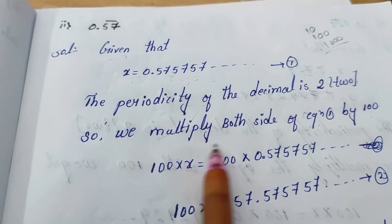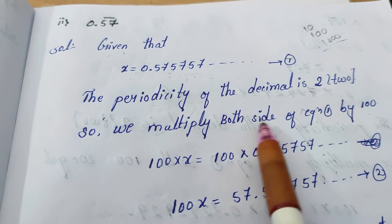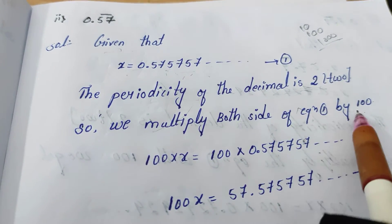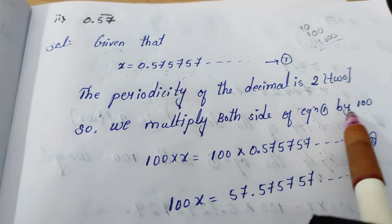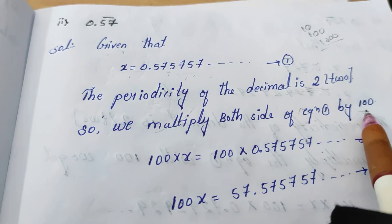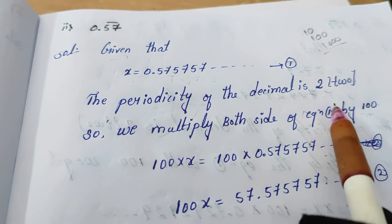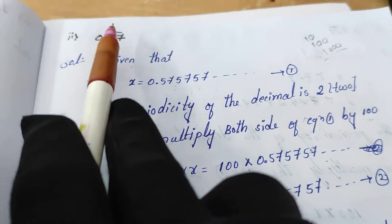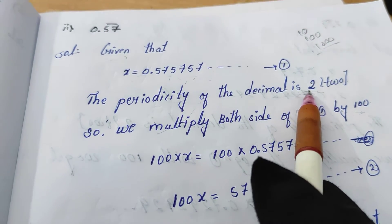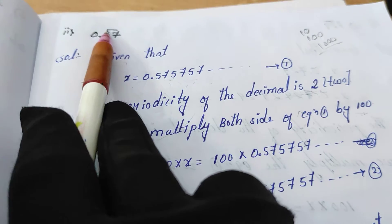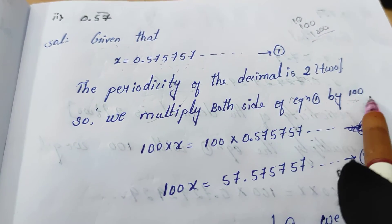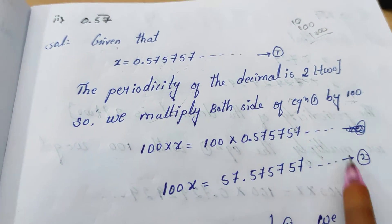In our question, 2 numbers are repeated. That's why we have to multiply both sides of equation 1 by 100. 2 numbers are there, so the periodicity is 2, and we multiply this equation by 100.